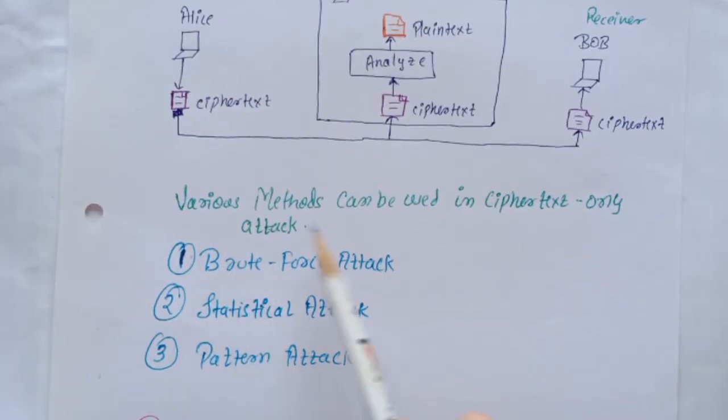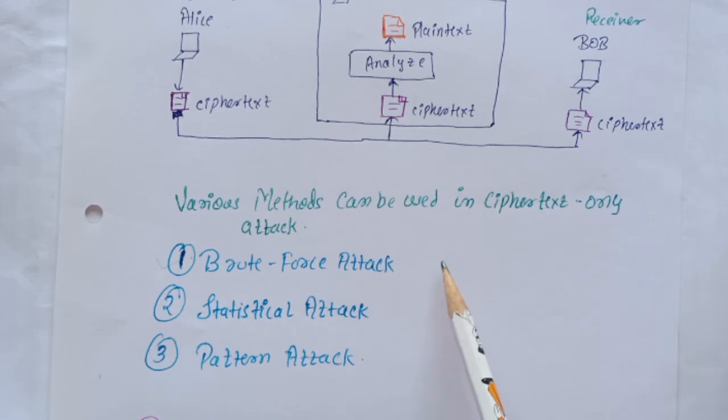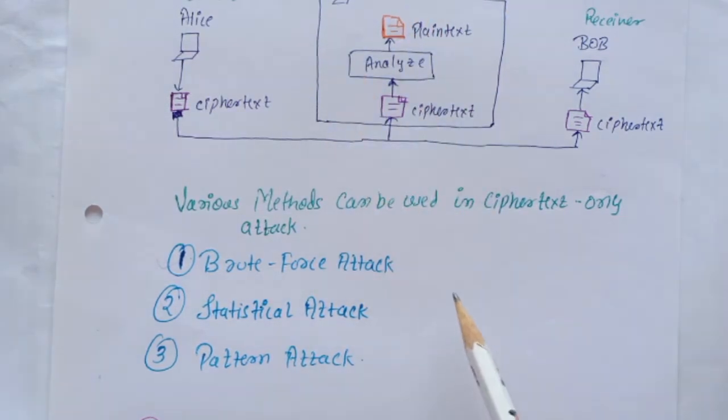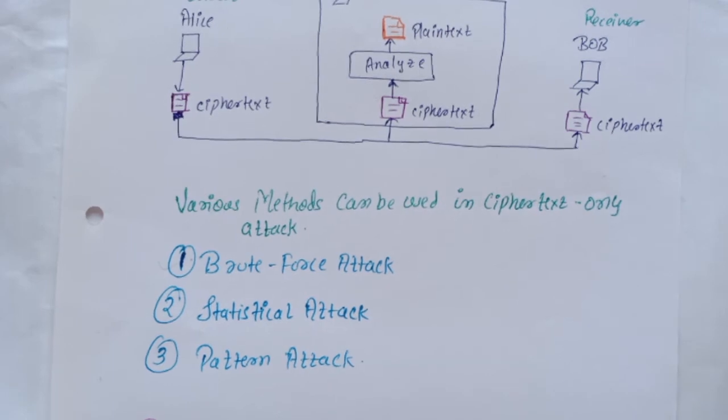There are various methods that can be used in ciphertext only attack. First is brute force attack, also called exhaustive key search method, where the intruder tries to use all the possible keys. We assume that Eve knows the algorithm and the key domain, that is the list of all possible keys. Using the intercepted cipher, Eve decrypts the ciphertext with every possible key until the retrieved plain text makes sense.